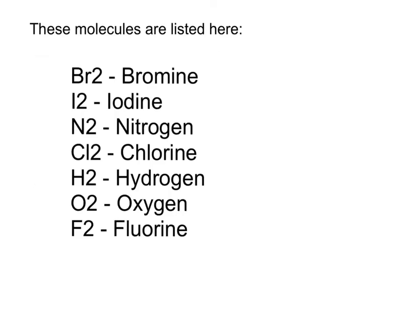Here is the list of the diatomic molecules. In this program the subscript 2 couldn't be displayed smaller, so just note that Br₂, I₂, and the rest all carry a subscript of 2 because there are two of them together. The diatomic elements are: bromine, iodine, nitrogen, chlorine, hydrogen, oxygen, and fluorine — they always exist in this paired state.